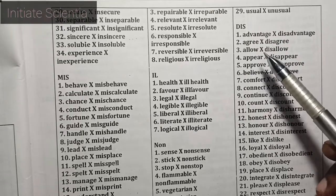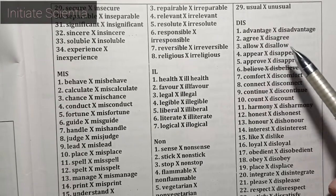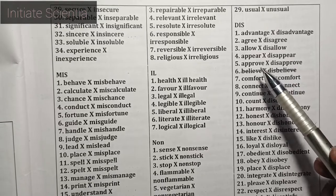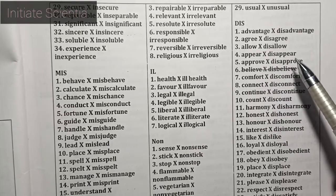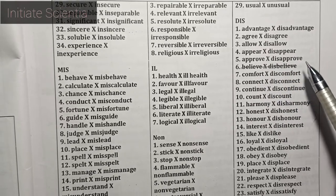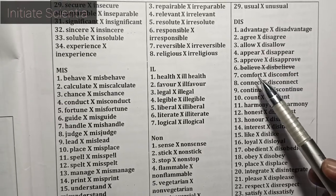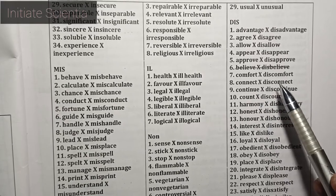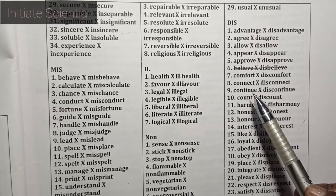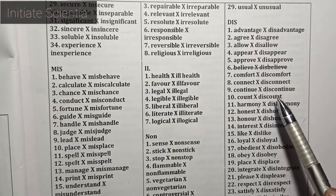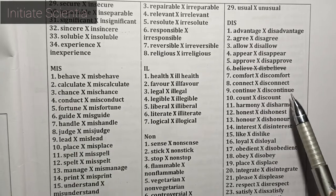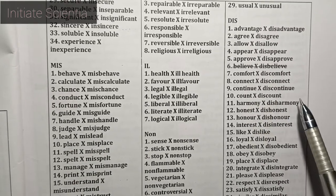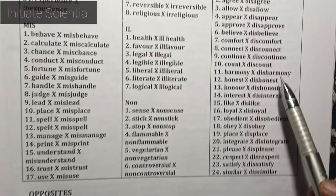Now the prefix DIS: advantage – disadvantage, agree – disagree, allow – disallow, appear – disappear, approve – disapprove, believe – disbelieve, comfort – discomfort, connect – disconnect, continue – discontinue, count – discount.